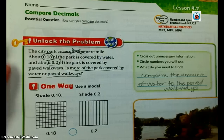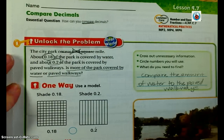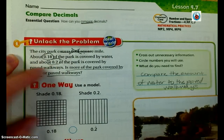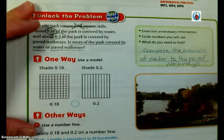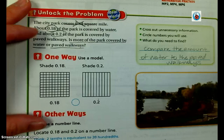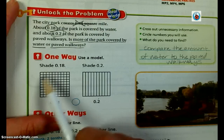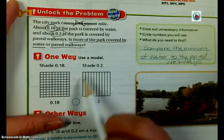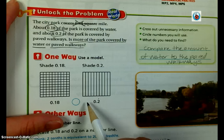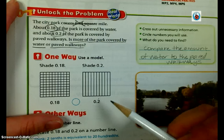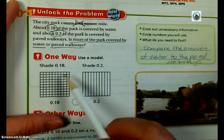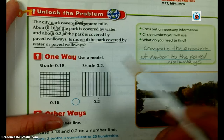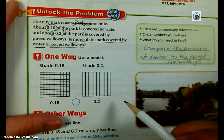The first way we're going to compare those two decimals — 18 hundredths and two tenths — is we're going to use a model. I have this one divided up into hundredths and this one divided up into tenths. They're all equal within, and the starting piece is the same — they're both squares, same size.